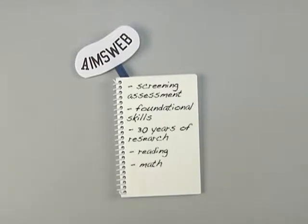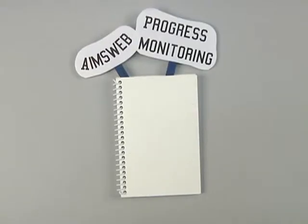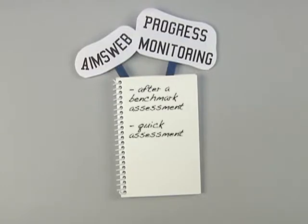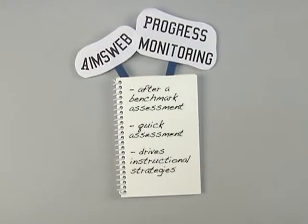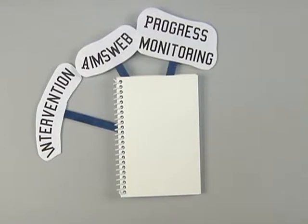AIMSweb gives teachers information about how students are progressing. Progress monitoring happens on a regular basis after a benchmark assessment has been completed. Progress monitoring is a quick assessment to gather data to drive the instructional strategies that teachers use with students to monitor their growth.